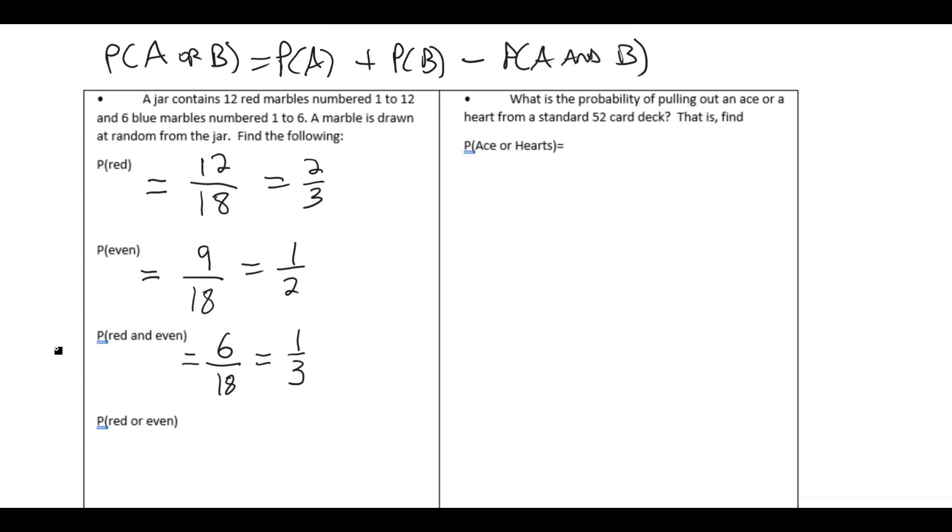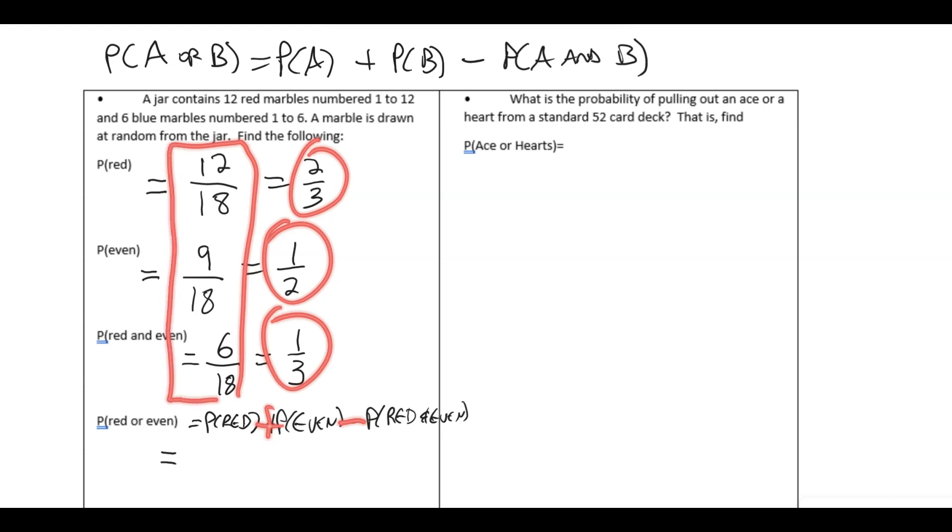So now we have the probability of the red or even. And we know that's the probability of red plus the probability of even minus the probability of red and even. And we have all these. And even though I've simplified the fractions, because we're doing an addition and subtraction, I would much rather work with the fractions that have a common denominator.